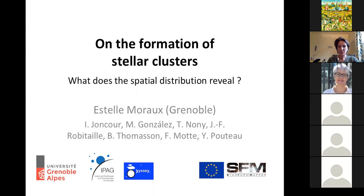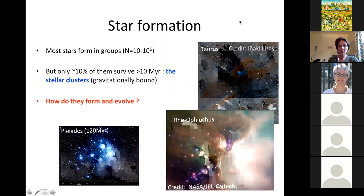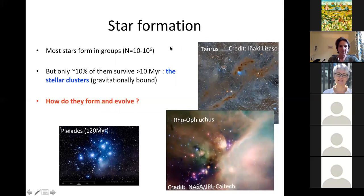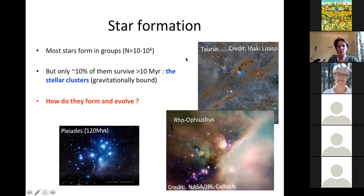I will talk about the spatial distribution of young stellar objects in clusters, and I will focus on trying to understand what it reveals about the formation of stellar clusters. But first, what do we know nowadays about star formation? We know it is very well established that most stars form in groups — ranging from small groups of 10 stars to very large clusters containing millions of stars. However, only about 10% of them survive for more than 10 million years, because only gravitationally bound objects — called stellar clusters — persist.